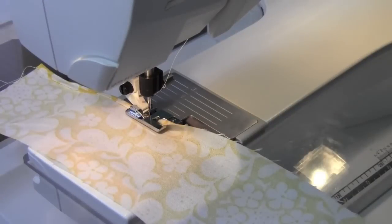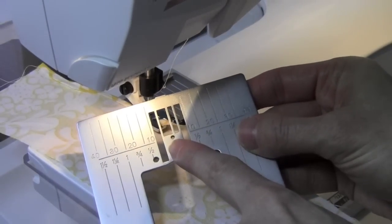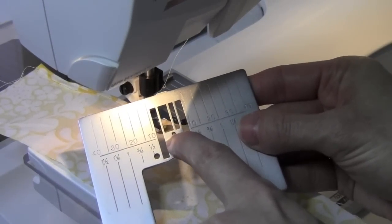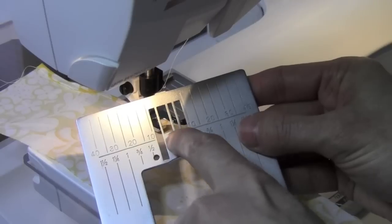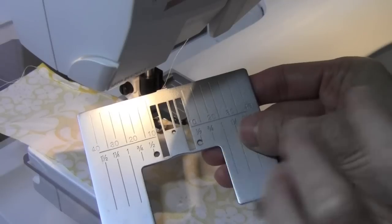If you have some finer fabrics, you might try using a straight stitch throat plate. That's going to prevent the fabric from getting pushed down into the opening because there's only a single hole. Of course, if you're using that, you need to make sure you're not moving the needle position to the right or to the left.